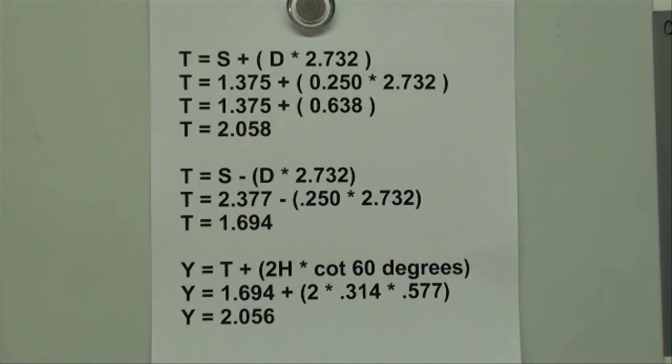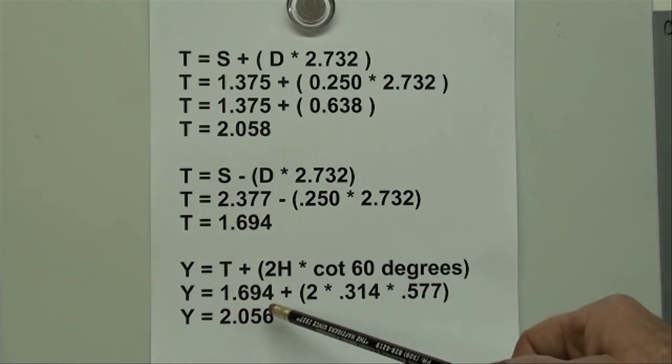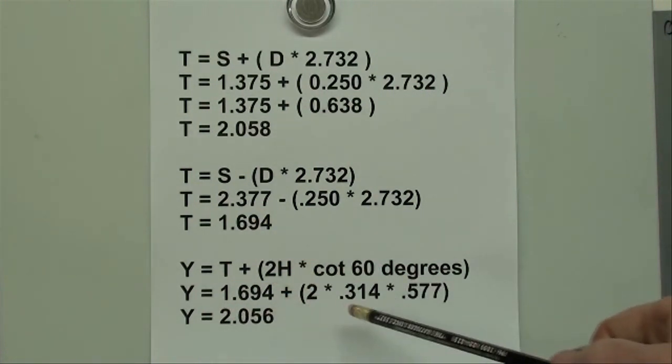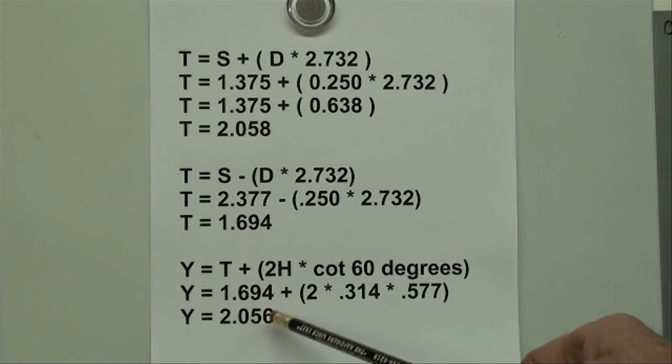Several men on YouTube have advised me of other methods, but I was using trig tables like this. Using the trig tables, look up 60 degrees and find the cotangent. The cotangent of 60 is 0.577. You can also do that with scientific calculators, or do a Google search. Using that information, we're going to find Y. Again, Y equals the T we found up here, 1.694, plus 2 times the depth times the cotangent of 60 degrees. Do the math and the result here is 2.056.